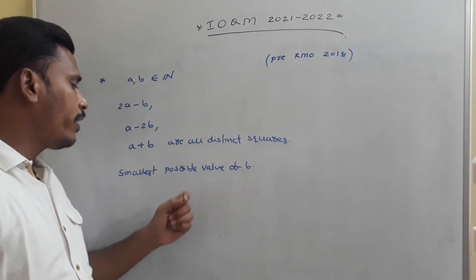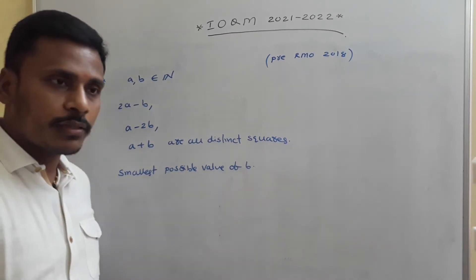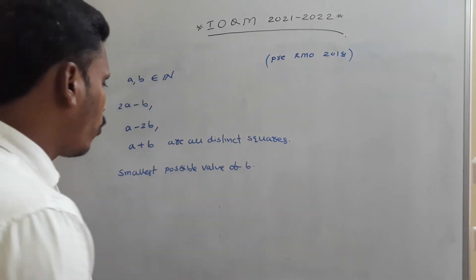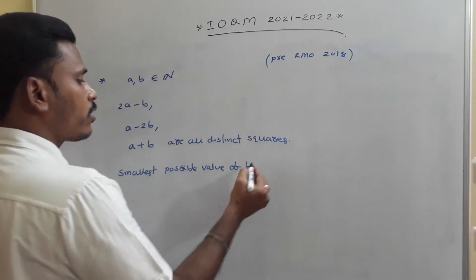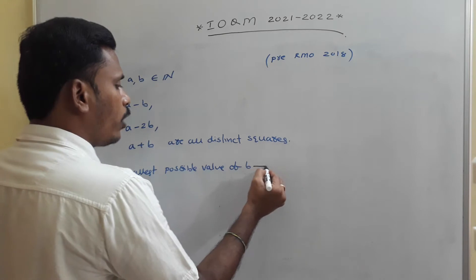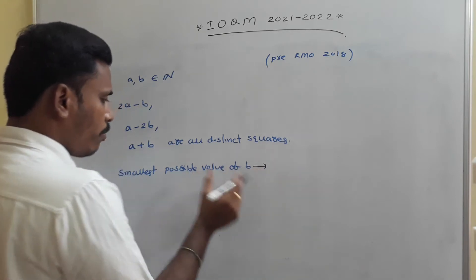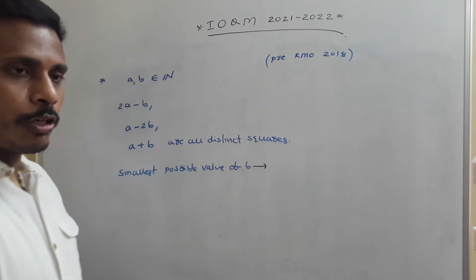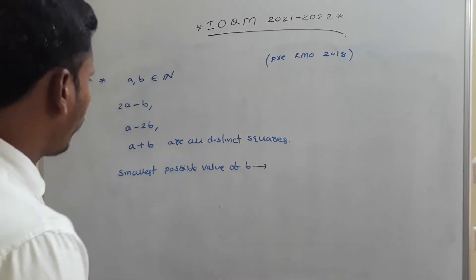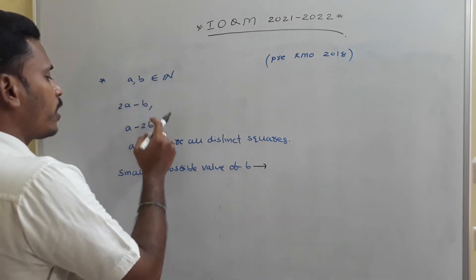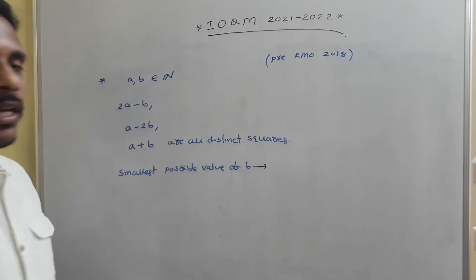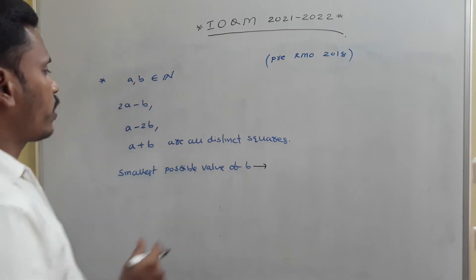2a minus b, a minus 2b, and a plus b are all distinct perfect squares, and we need to find the smallest possible value of b.